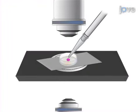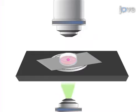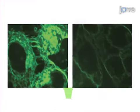Next, add the appropriate pre-warmed media and immediately begin imaging. The final step is to analyze and quantify intracellular FM1-43 fluorescence.